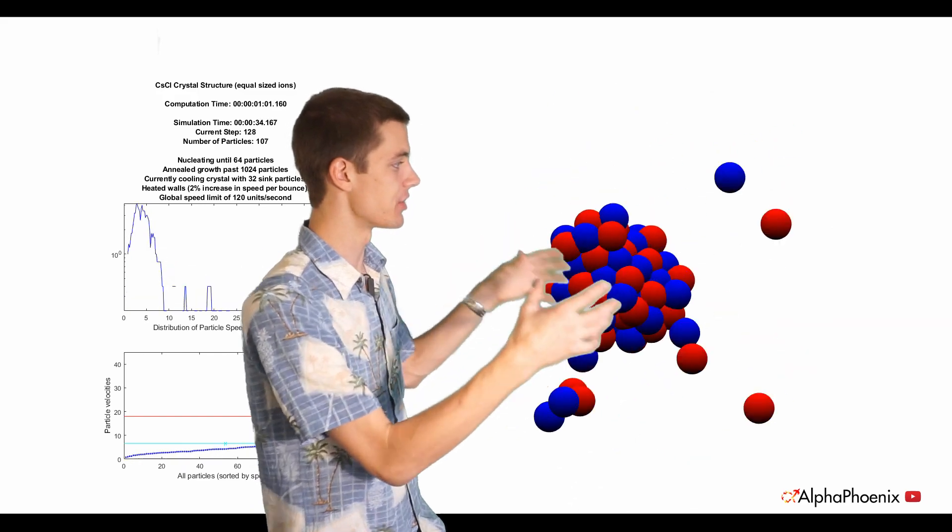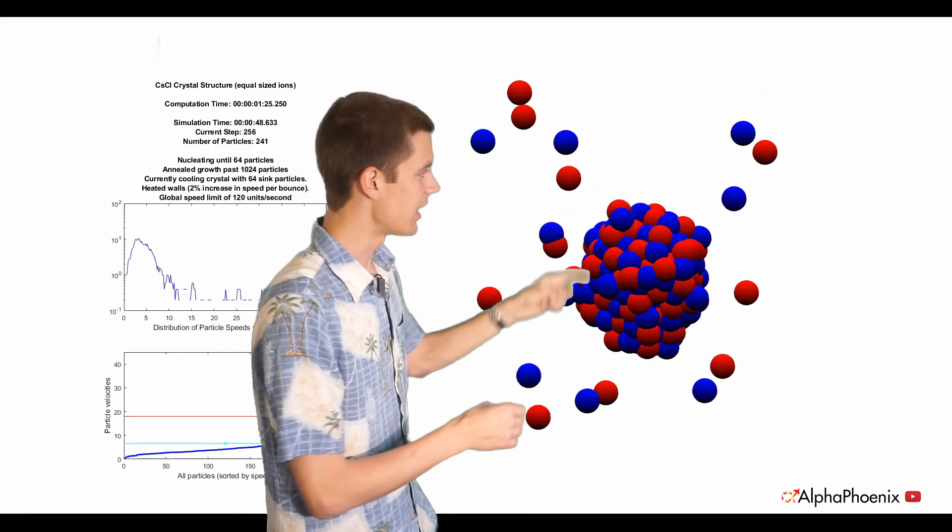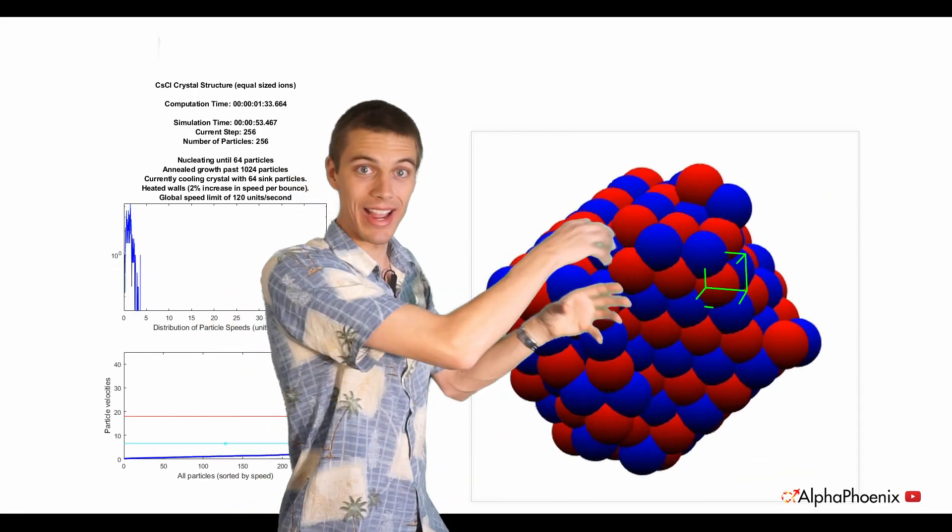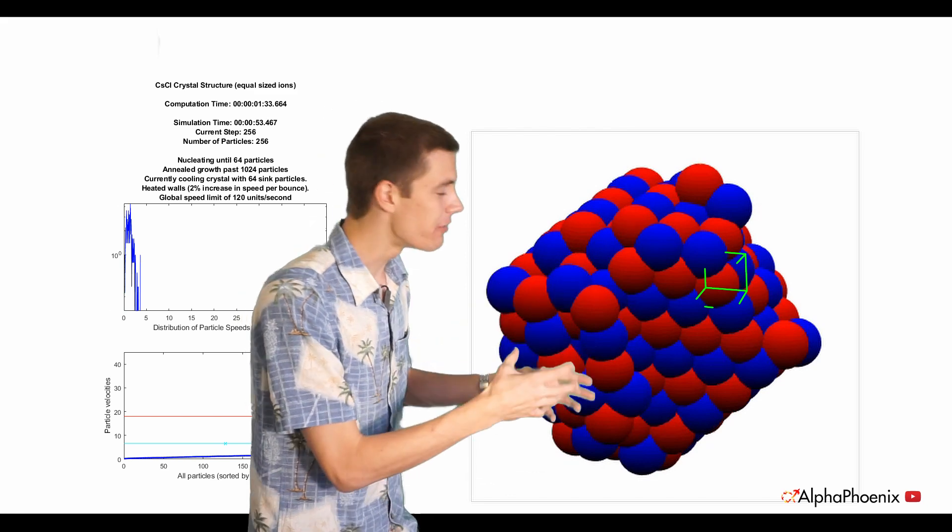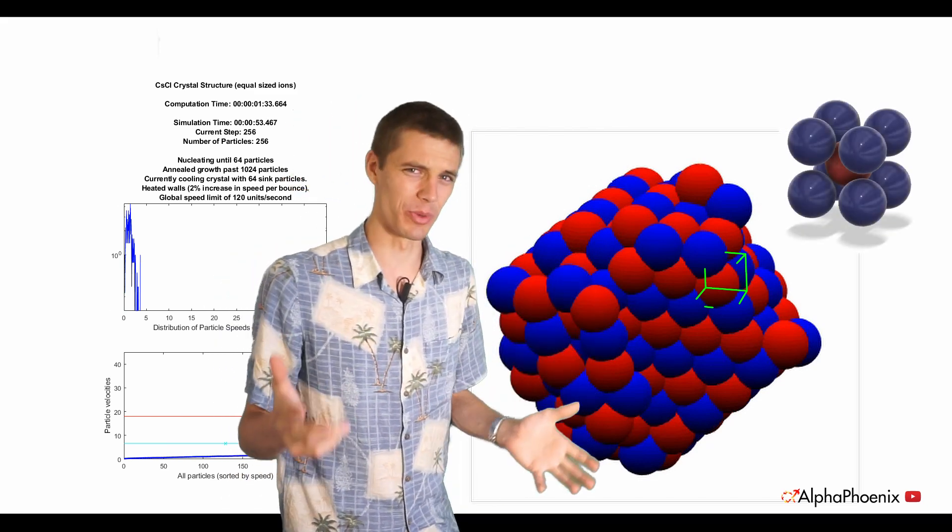So if we let this simulation go for a minute and more and more particles are thrown in towards the center where they're accumulating and this crystal is growing in three dimensions. If you look very closely, you can see that around every red ion, there are eight blue ions. And they are in fact forming the cesium chloride crystal structure. It's really wonderful when math works sometimes.